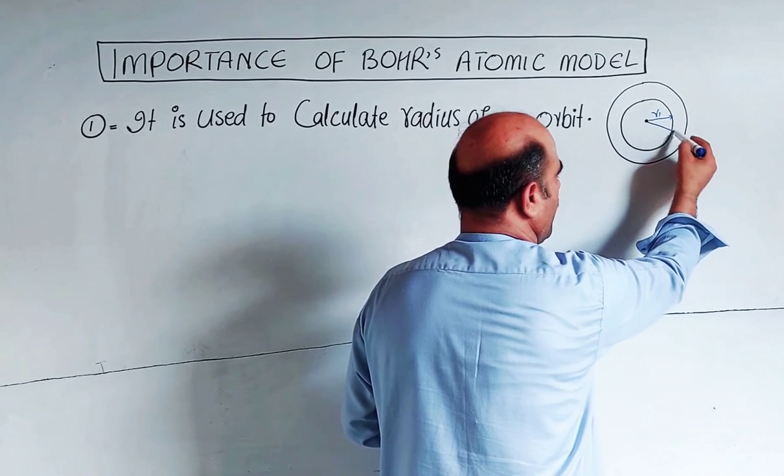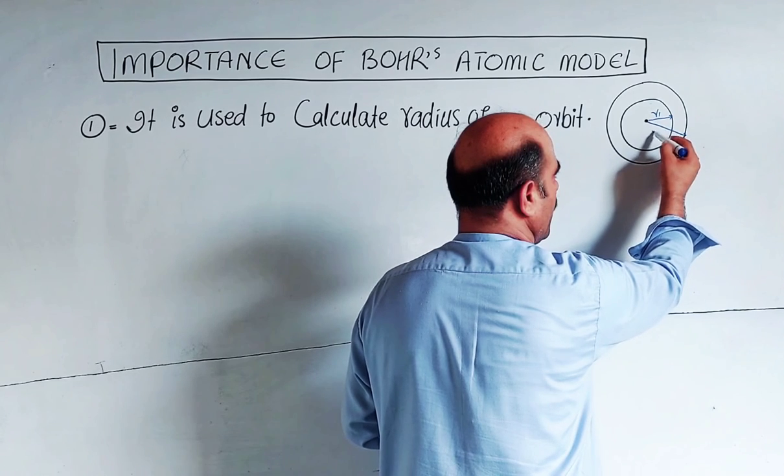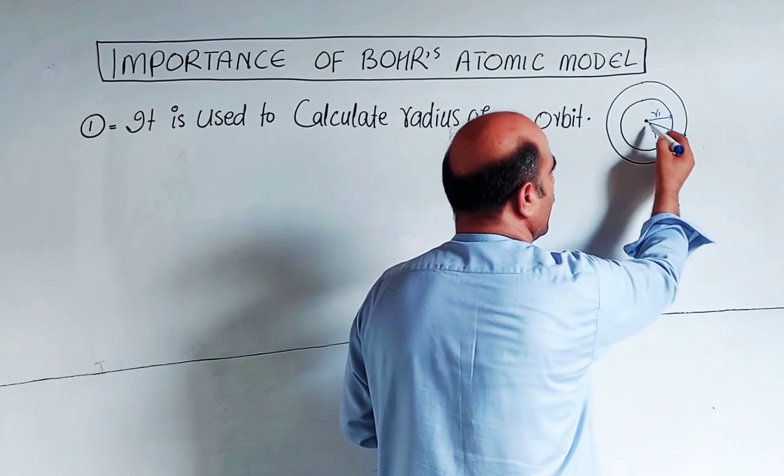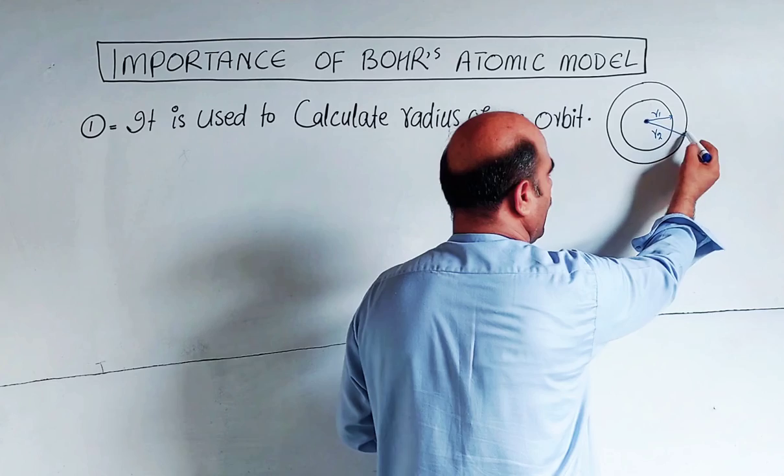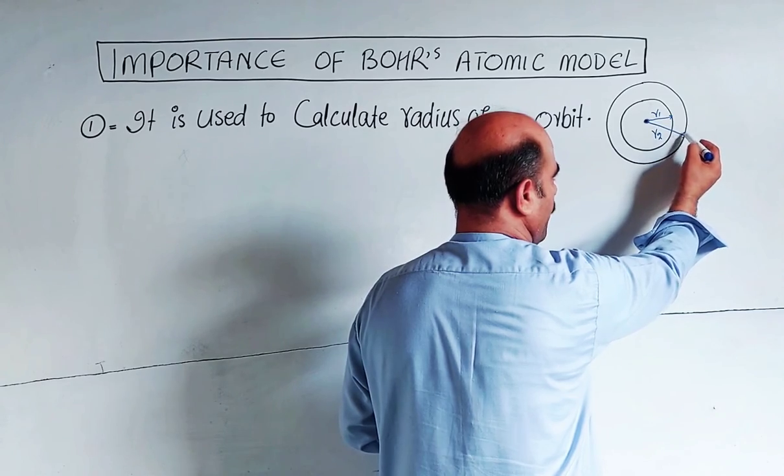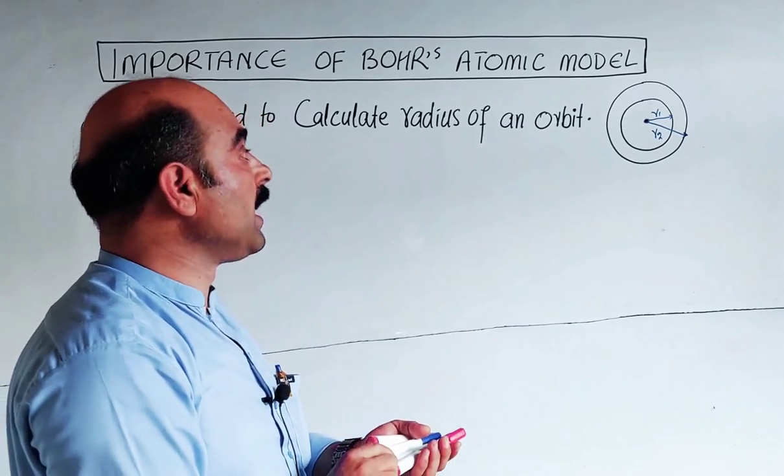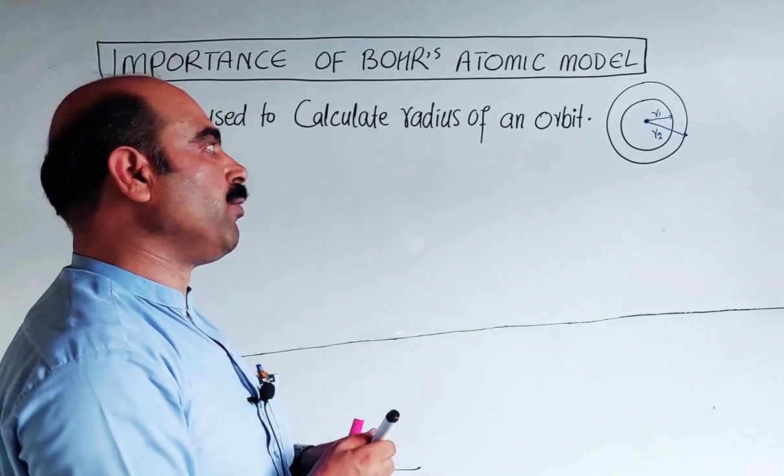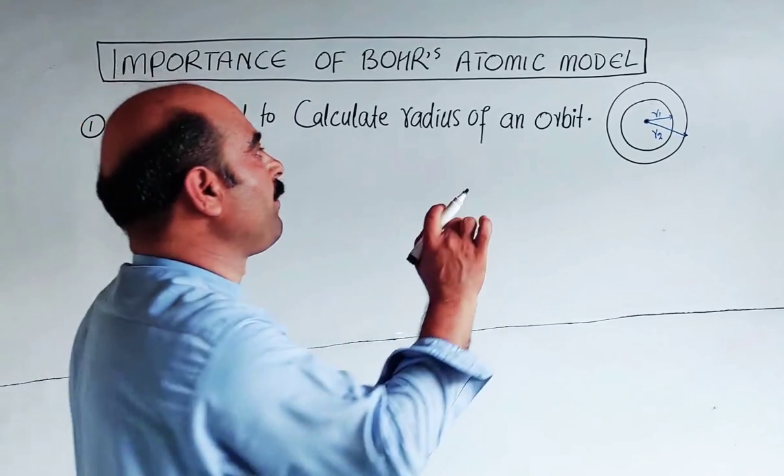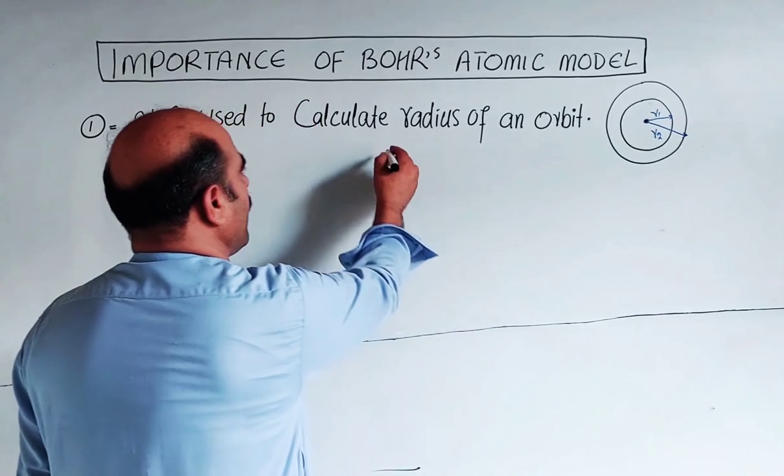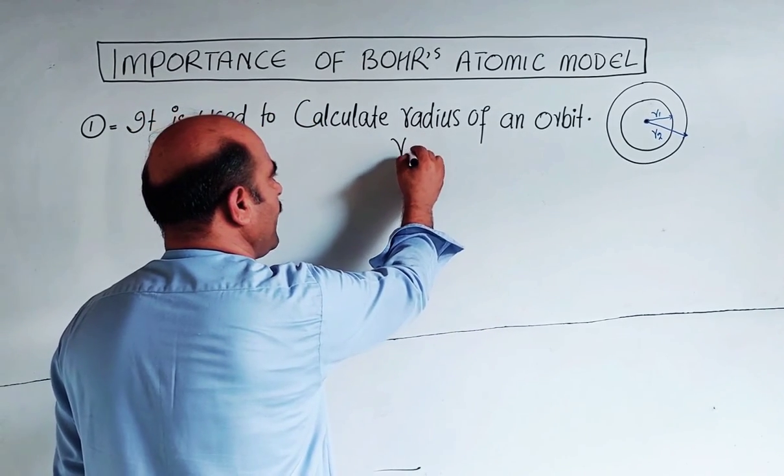The second orbit is farther from the nucleus, so its radius is larger. The radius goes from the center to the last margin of the sphere. With Bohr's atomic model, we can calculate the radius of any orbit using a general formula.